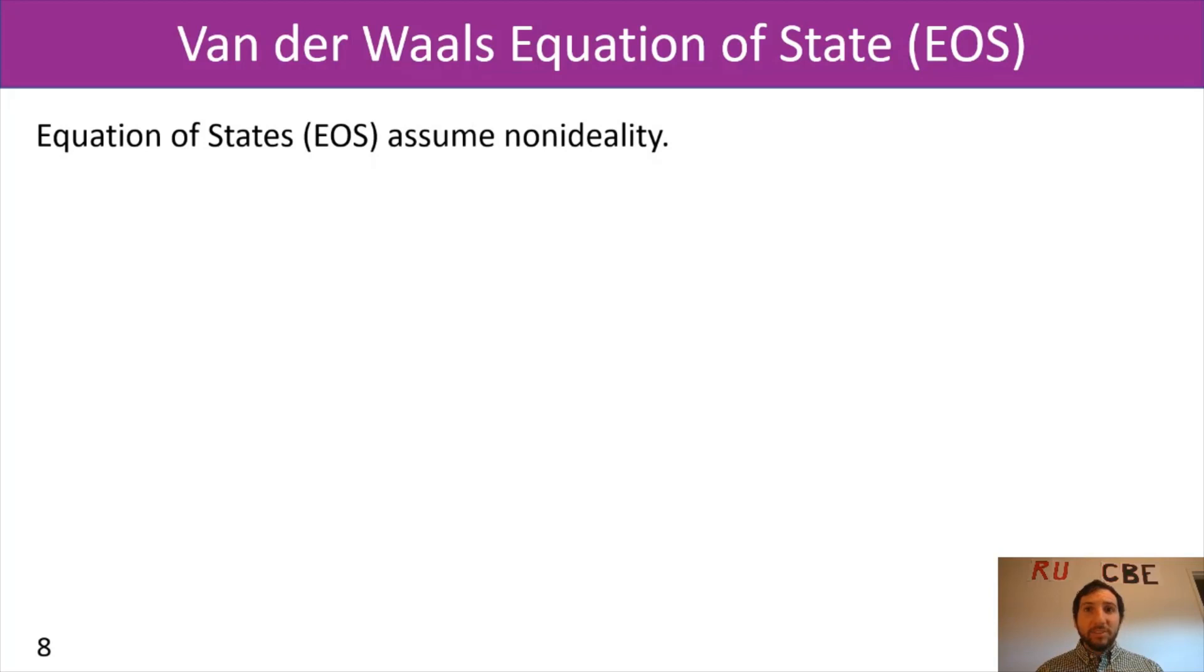A and B are coefficients dependent on whatever chemical species you're working with. These are going to account for two of the items that we assumed were not present with an ideal gas. The first assumption that we were making was that every gas molecule contributes minimally to the total volume of your system. So it has a negligible volume. In this case, Van der Waals' equation of state is going to correct for that.